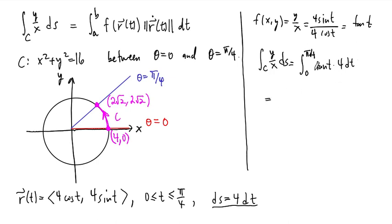Of course, we know how to integrate tangent. This becomes 4 times the antiderivative of tangent, which is natural log of secant of t, evaluated from 0 to pi over 4.